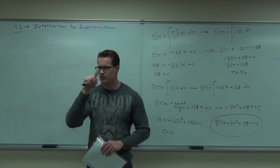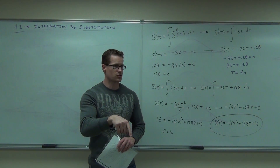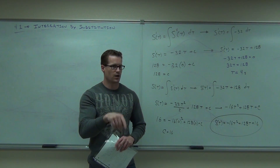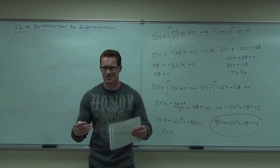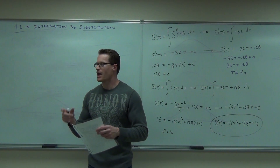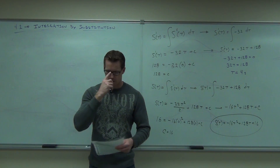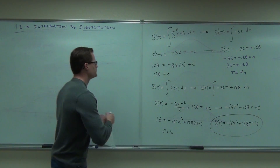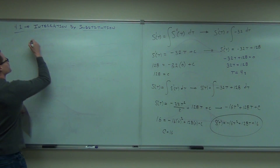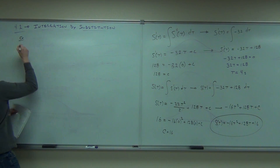somehow by distributing or dividing. You manipulate trig functions and make it fit somehow. What this is called is a U substitution, so we'll be using the letter U.